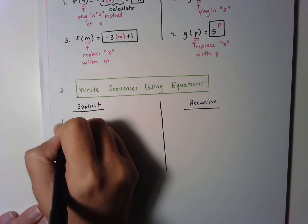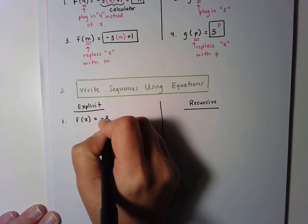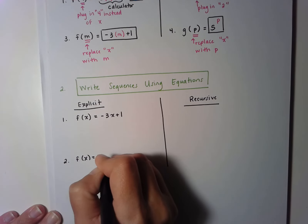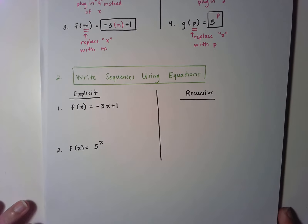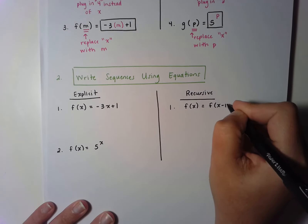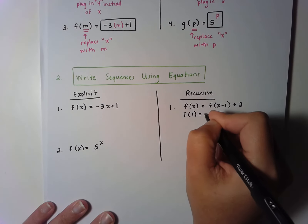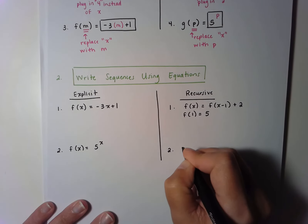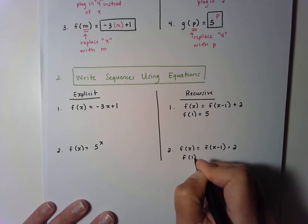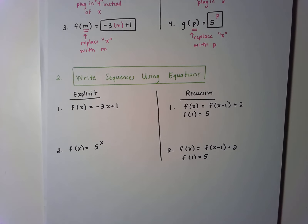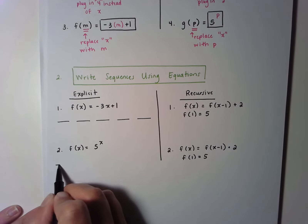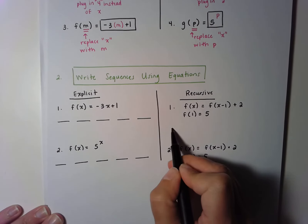An example of an explicit arithmetic equation would be f of x equals negative 3x plus 1. A recursive arithmetic example would be f of x equals f of x minus 1 plus 2, with starting value f of 1 equals 5. A recursive geometric example would be f of x equals f of x minus 1 times 2, also with f of 1 equals 5. I'm always going to ask you to find the first 5 terms, so we're going to find those for each of these sequences using the equation.